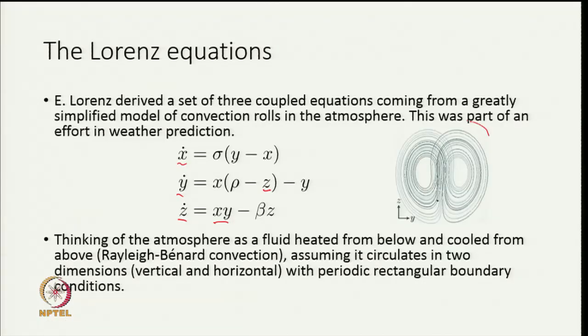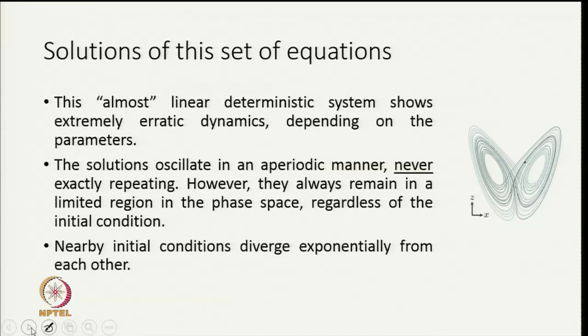The interesting thing about these equations is that the solutions look something like this: the orbits are in three dimensional space in x, y and z, and if you look at them in projection these seem to be confined to some lower space. This almost linear deterministic system shows extremely erratic dynamics which depends on the values of the parameters.